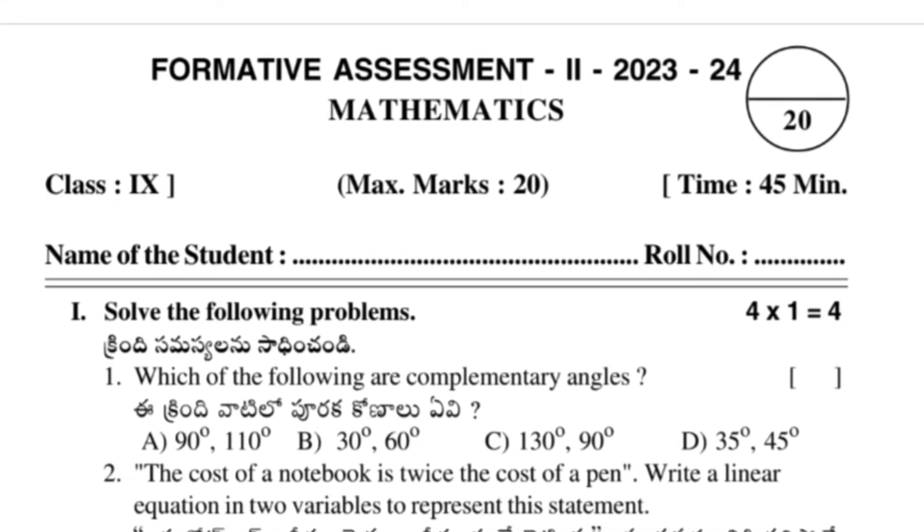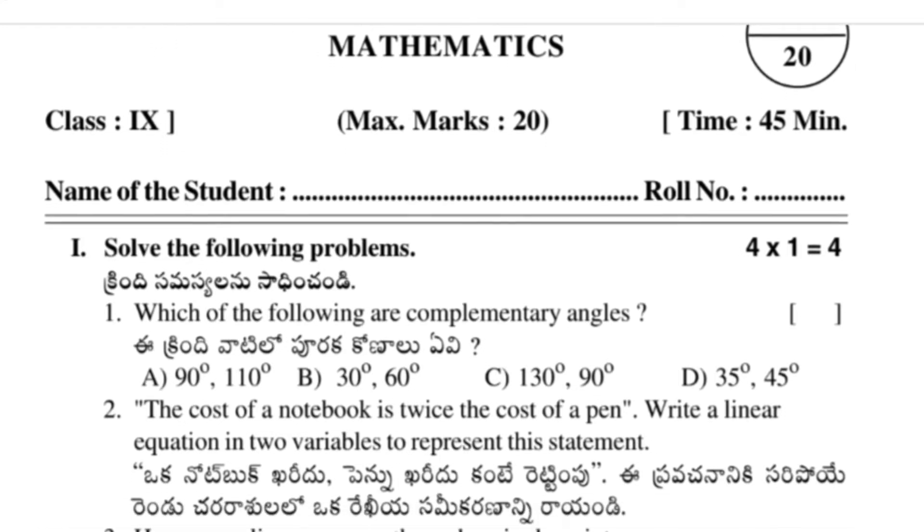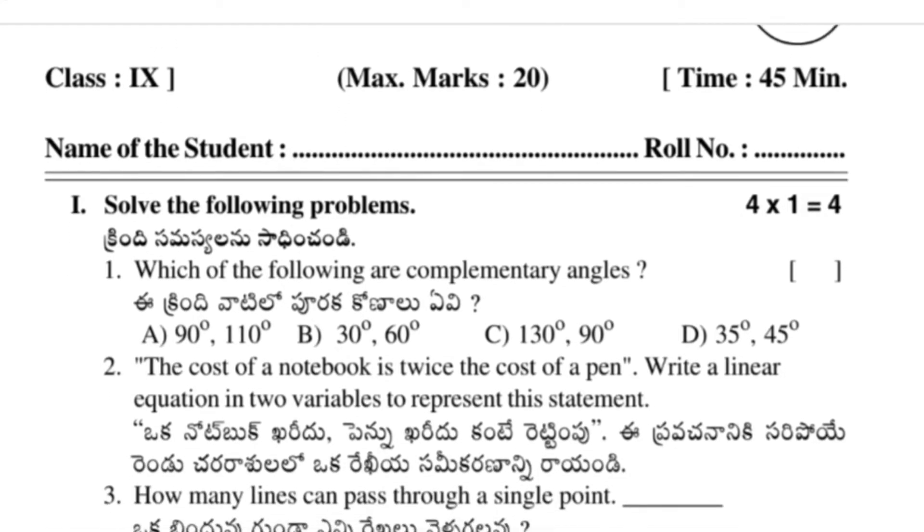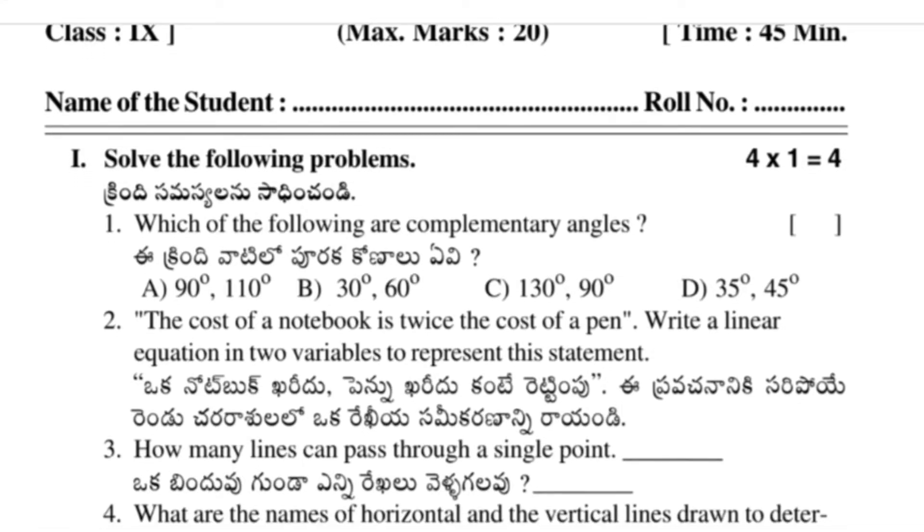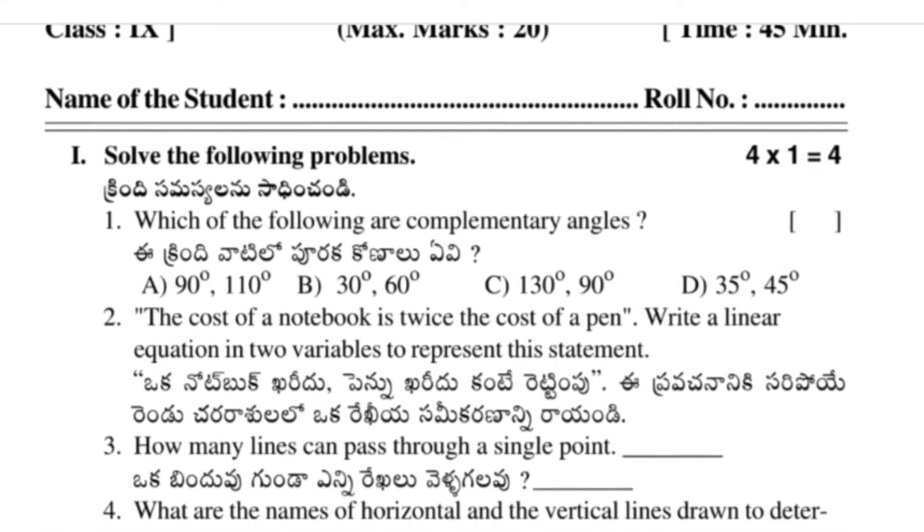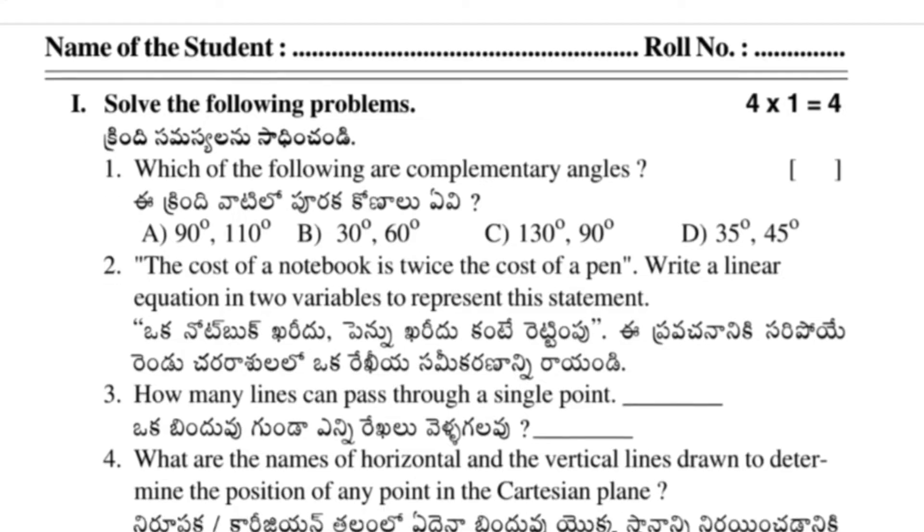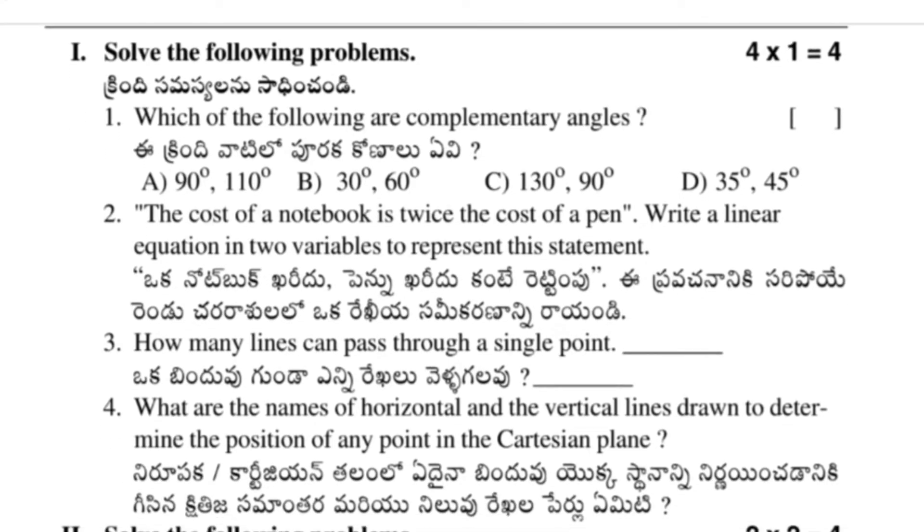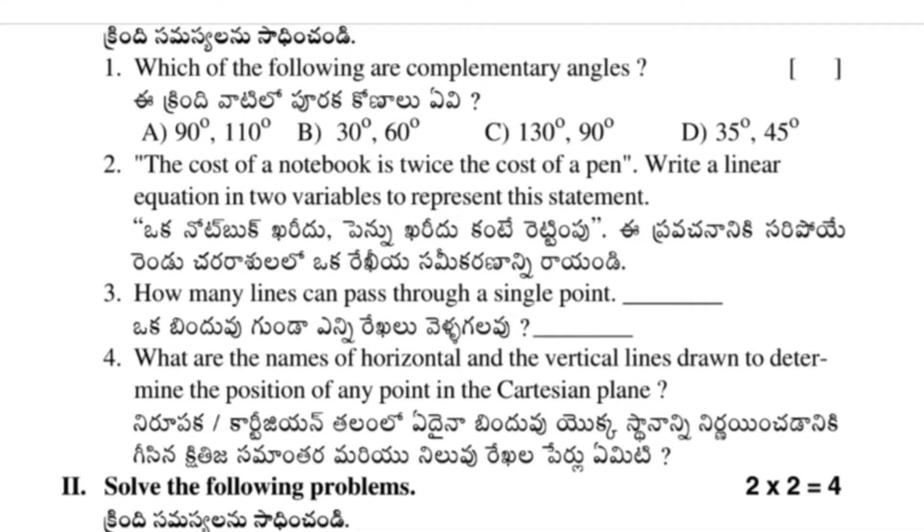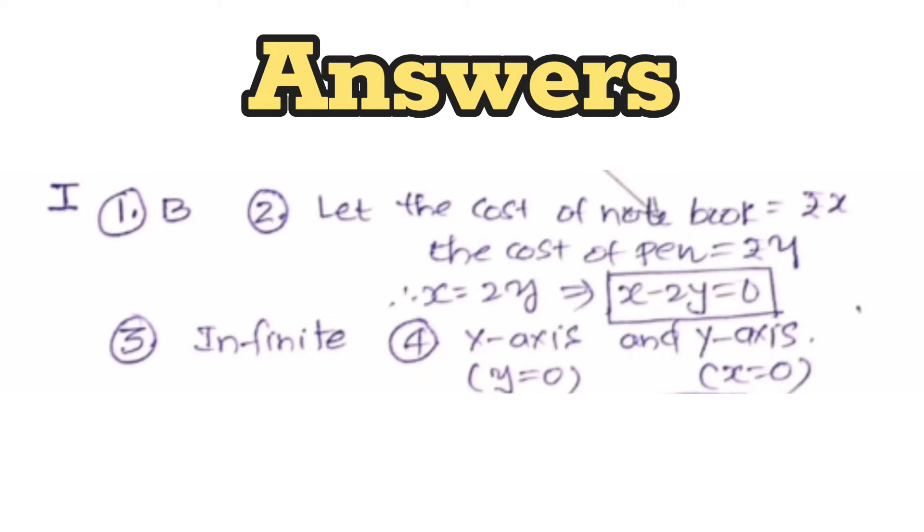The answer is B: 30 degrees, 60 degrees. First, we'll see the first section, all four questions, then I will provide answers. Then second section and its answers, third section and answers, like that. In the first section we have four questions. First answer is B, second question is the cost of a notebook, then third and fourth answers here.